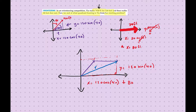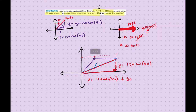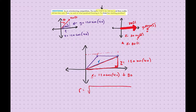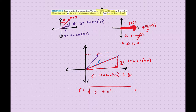We also add the x-component of the second vector, which is 80 feet. So we have a right triangle where we know two sides — our a and our b. To find the hypotenuse R, we take the square root of y-squared plus x-squared. That gives us the magnitude — how far Tia is from her starting position. Putting it all in the calculator, we get R equals approximately 188.44 feet.